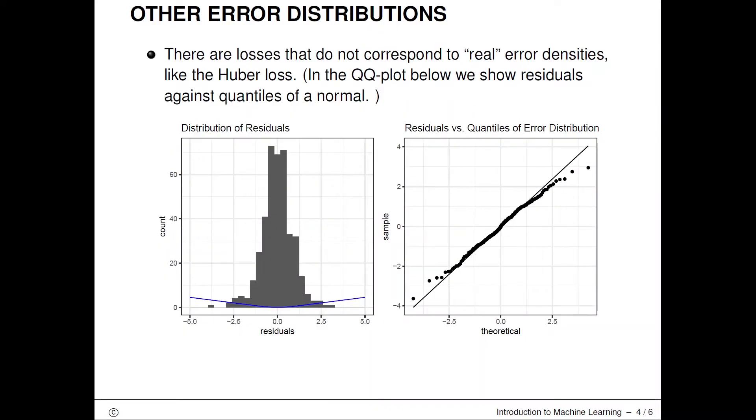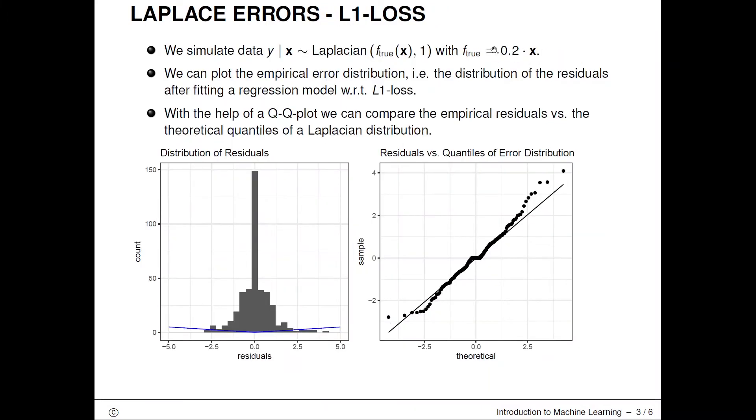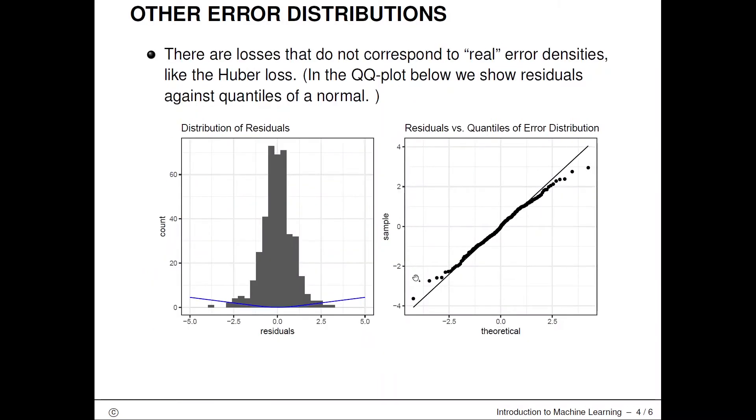There are other loss functions that do not correspond to proper real error densities. We can do the same empirical analysis as before now for the Huber loss.